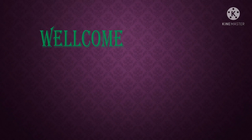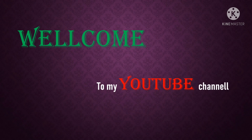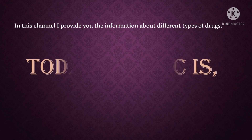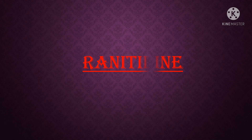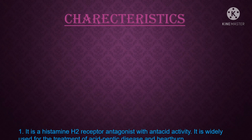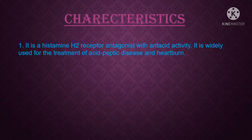Hello viewers, welcome to my YouTube channel Drug Pharma. In this channel I share information about different types of drugs like structure, synthesis, mechanism of action, uses and side effects. Today's topic is ranitidine. Ranitidine is a histamine receptor antagonist used in the treatment of acid peptic diseases. It is a histamine H2 receptor antagonist with antacid activity, widely used for the treatment of acid peptic disease and heartburn.